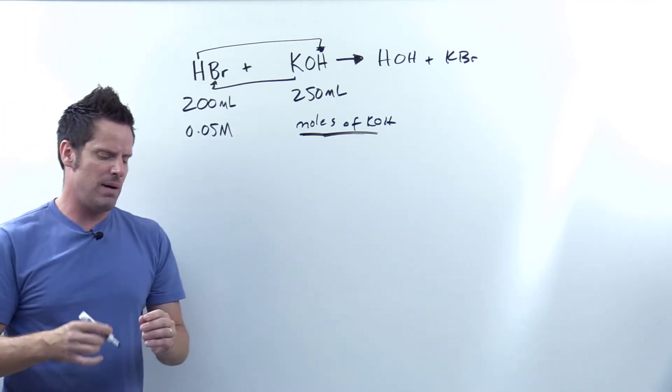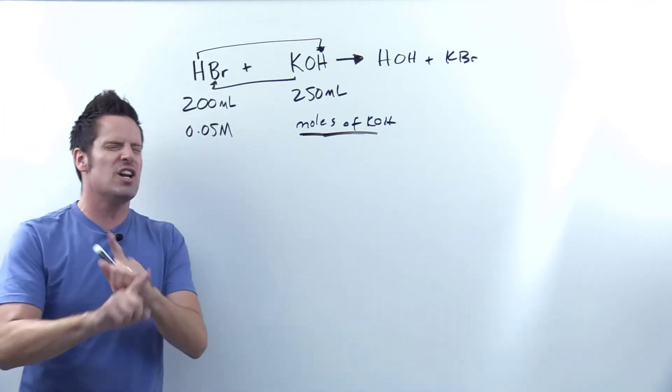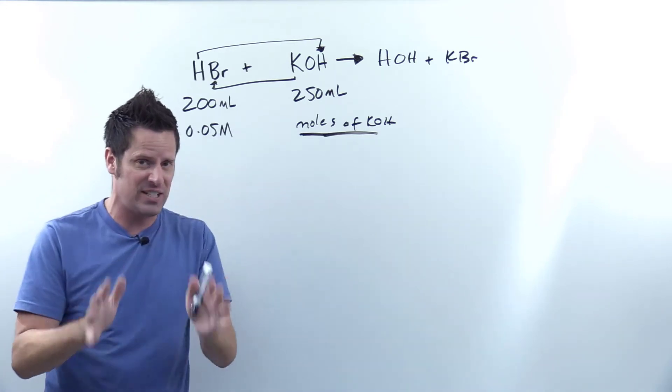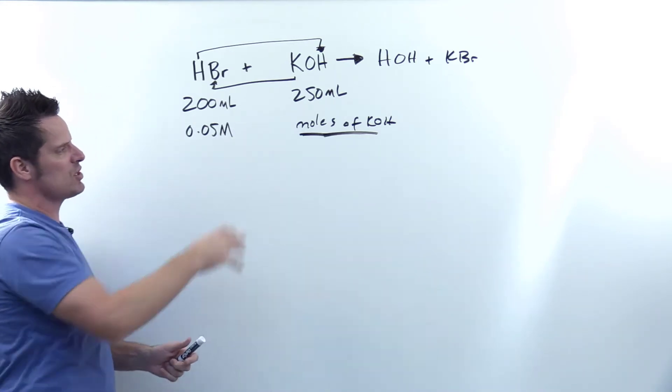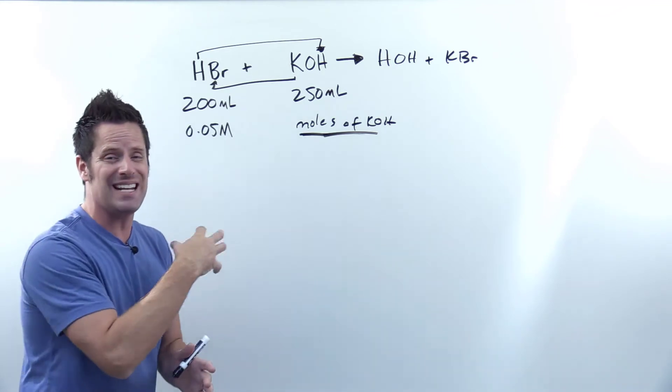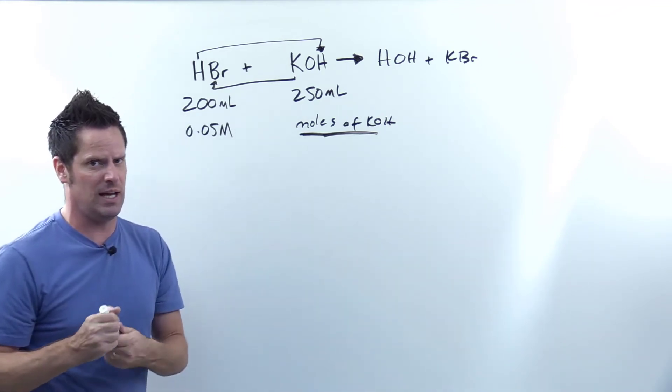Now whenever you're dealing with one of these situations, my counsel is almost always, not always always always, but most of the time, if you're given multiple values on a problem, you're going to start by writing down the value that has no denominator units.